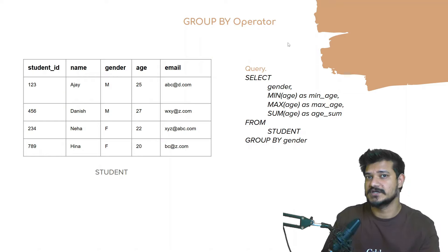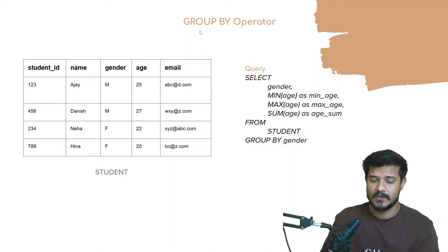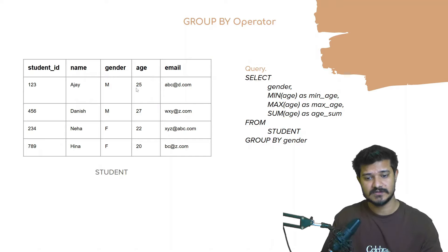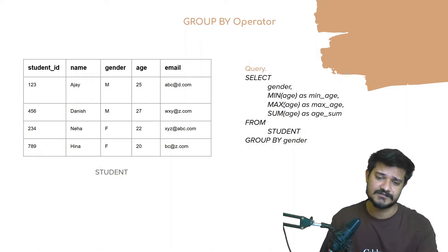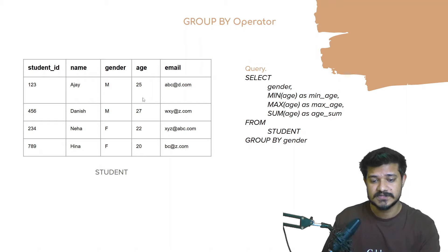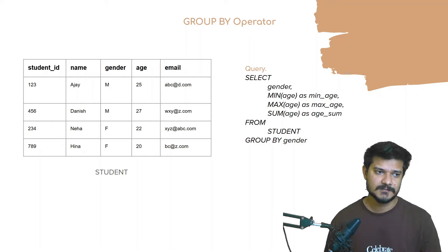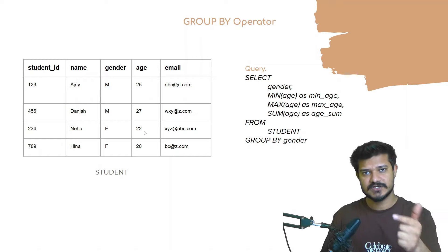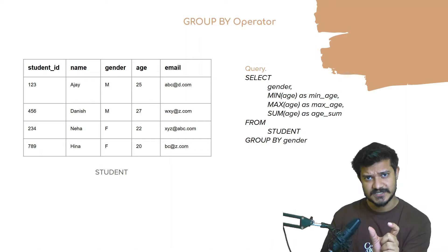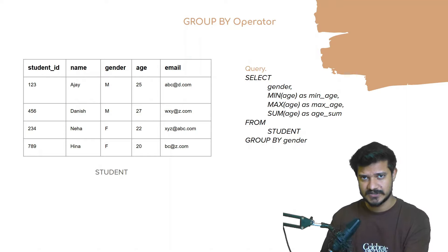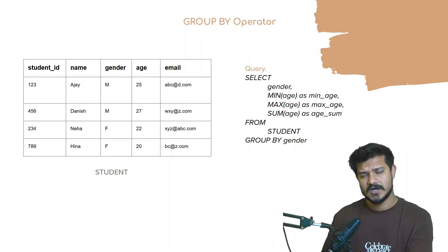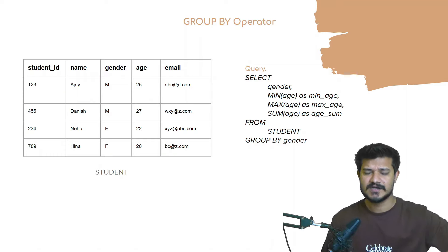Now that we know the aggregate functions, it's very important to understand the group by operator. Group by groups the result. What if you want to group certain rows together? For example, suppose you have a table with columns country, city, and population. If you want to know the overall population per country, you can find the sum of population and group by country — so for India, all city populations are summed up.